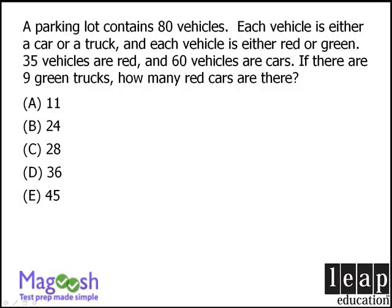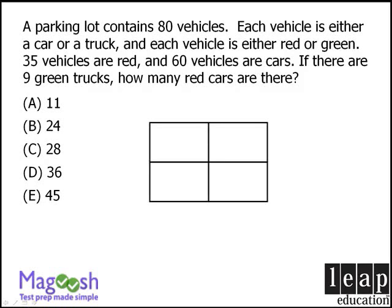You may find it useful to pause this video now and review the question before continuing. In this question we have a population of vehicles, and each member of this population has exactly two features associated with it: the vehicle's color — red or green — and the vehicle's type — car or truck. For questions like this, we can tackle them using what's known as a double matrix. We can also use Venn diagrams, but the double matrix method is superior for upper level questions of this type.